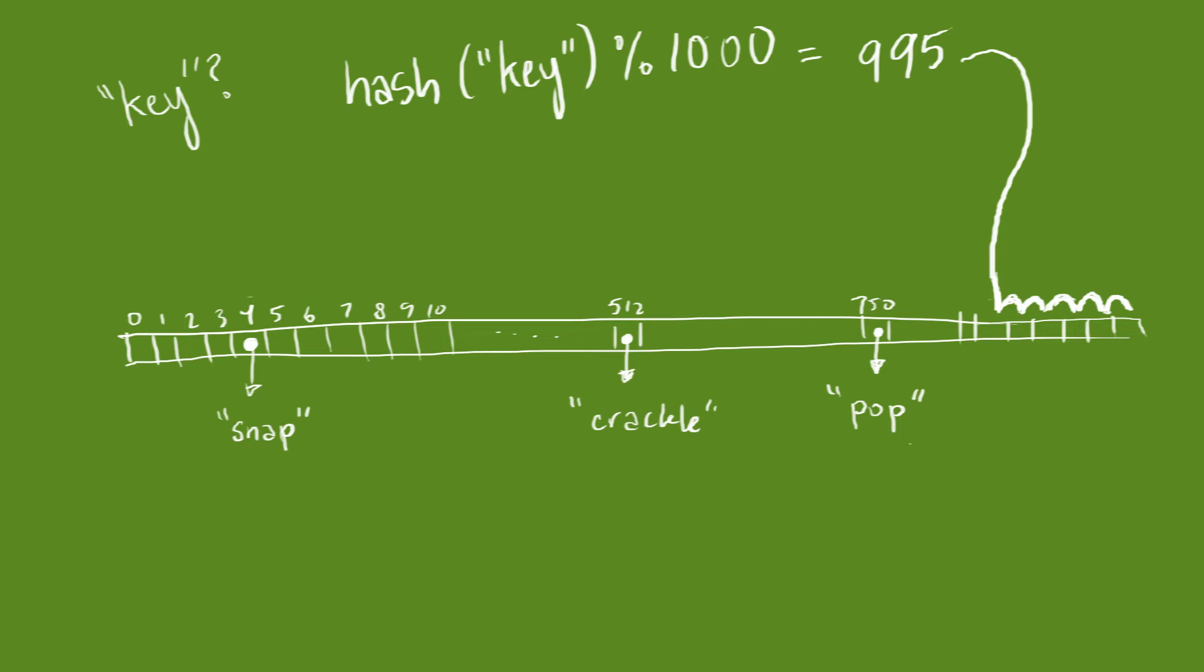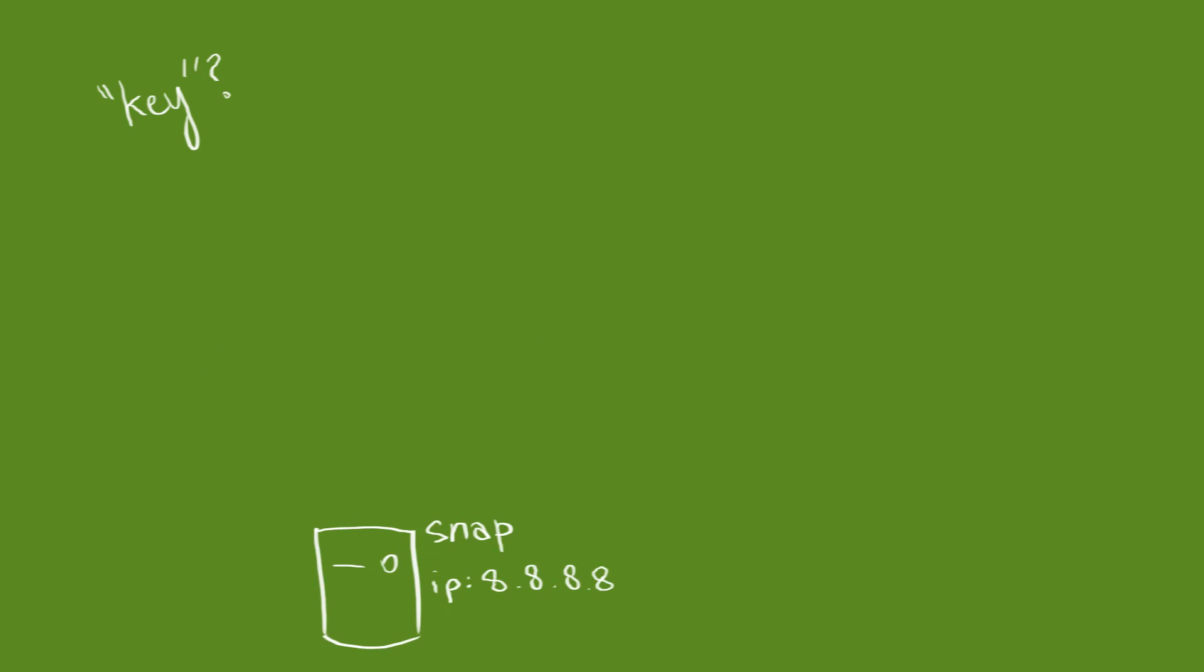If we reach the end of the array without hitting any servers, we just loop back to element 0 and move forward from there. Once we know the ID of the server we're hitting, we can look up the rest of the details and pass them all back to the user.